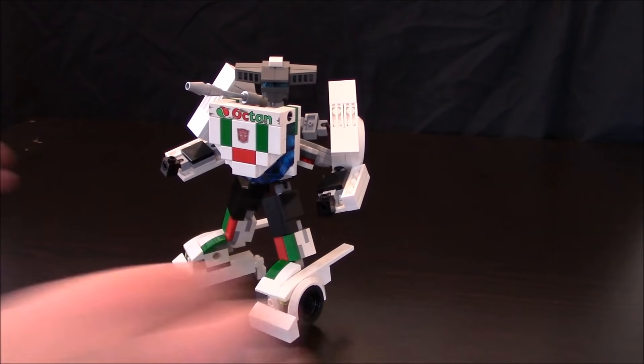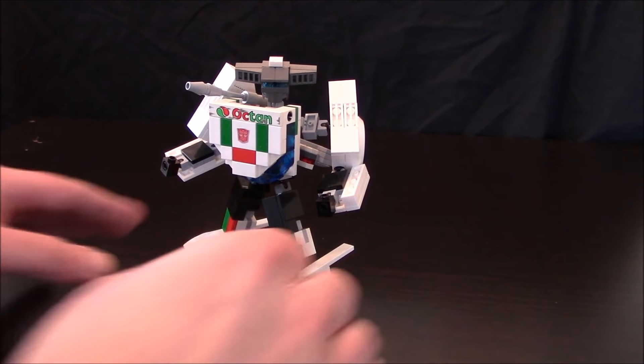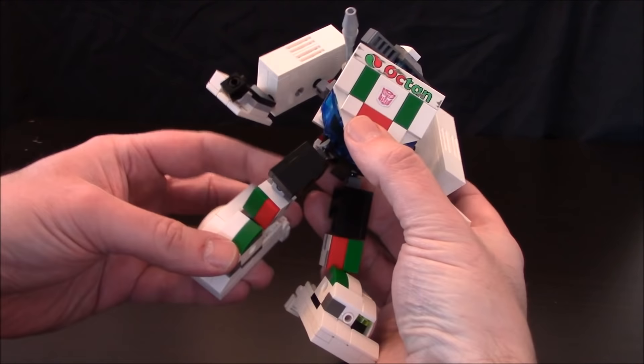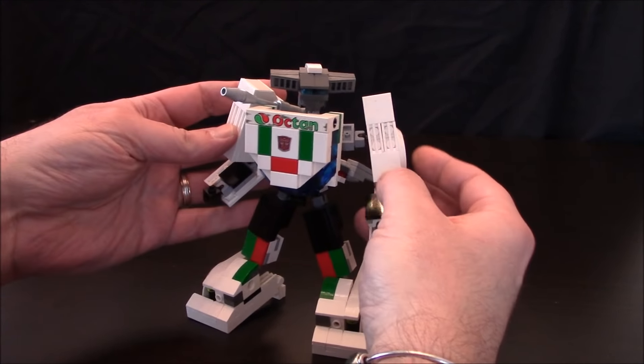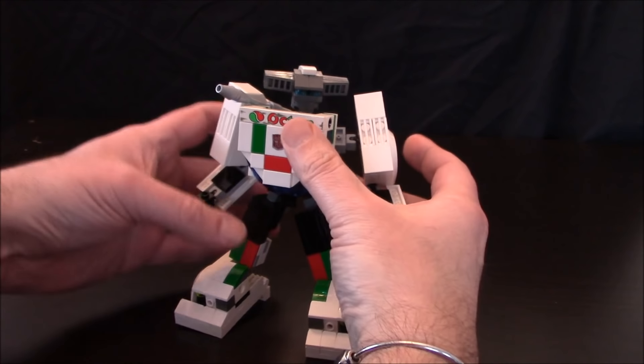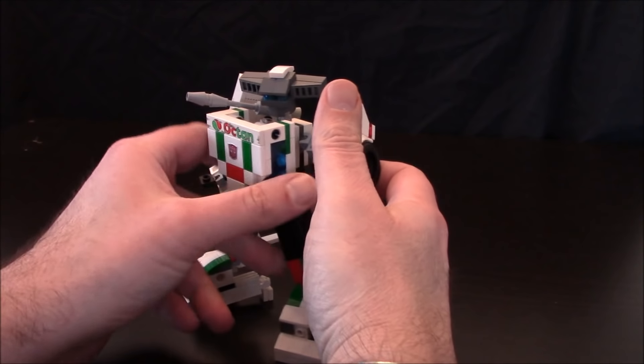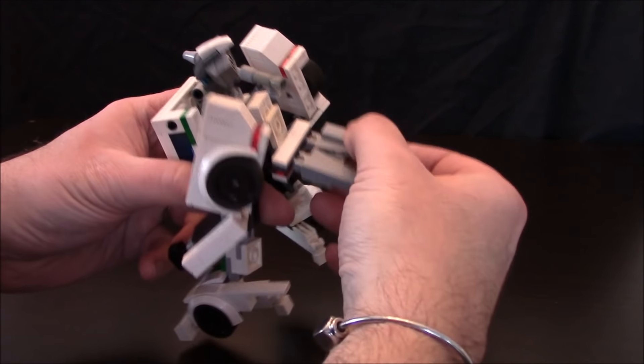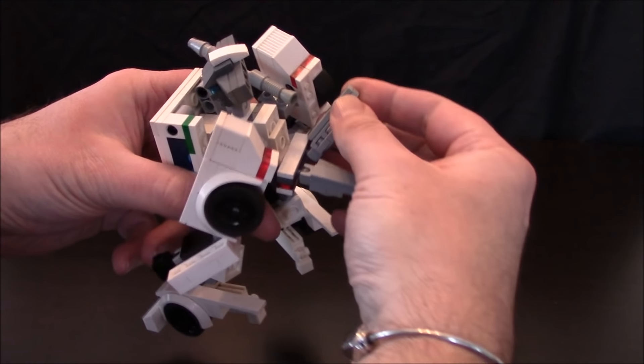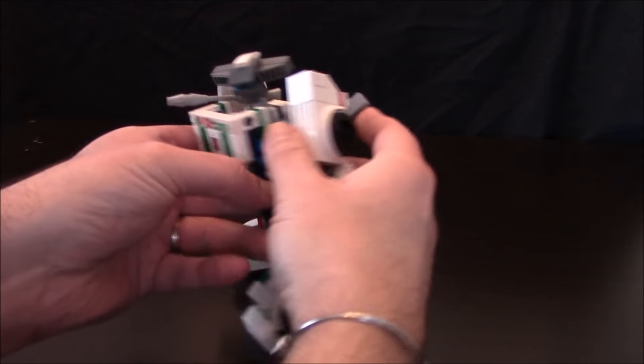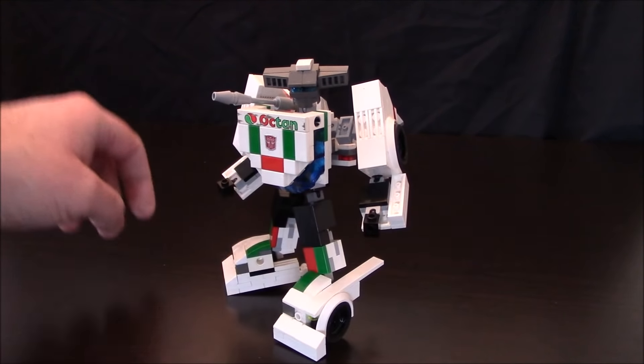There's Wheeljack, his short little stocky self. He's got articulation in the knees, ankles, shoulders, and elbows. His waist also will swivel to a certain point. I did forget one step - you want to go around the back, take out his wing pieces, and put them out however you like, just like the G1 toy.